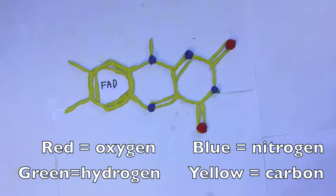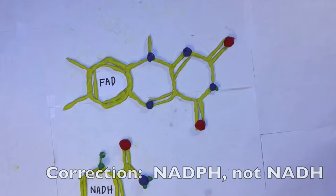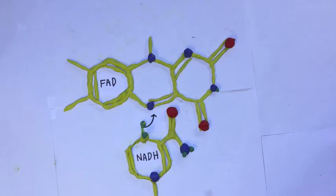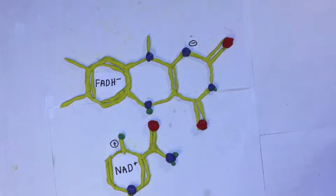Squalene monooxygenase is bound to the endoplasmic reticulum of the cell in association with flavin adenine dinucleotide, FAD, a redox cofactor bound to the enzyme. NADPH is a coenzyme that acts as a reducing agent and transfers electrons to the FAD, giving it a negative charge.